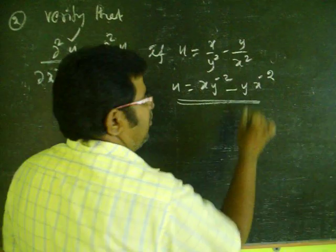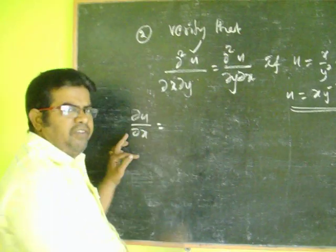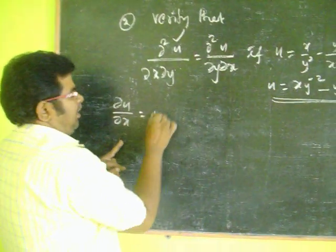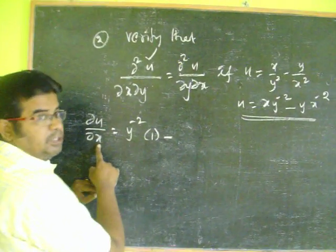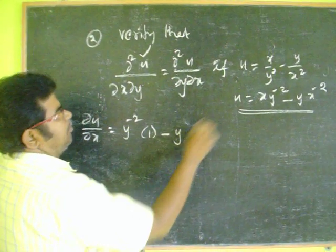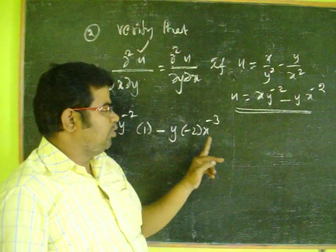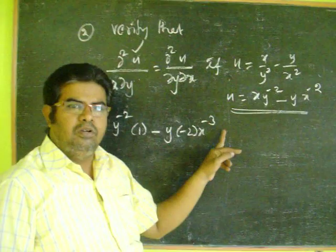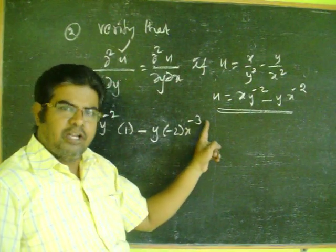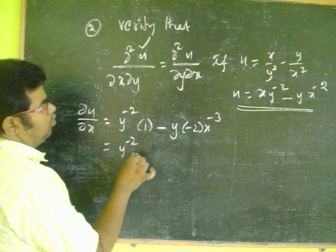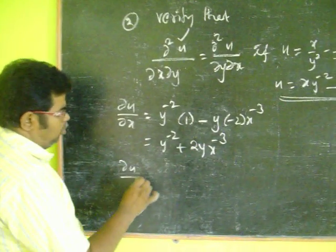This is a function u in terms of x and y. First, find ∂u/∂x. The derivative with respect to x treats y as a constant. Therefore, y⁻² is a constant and derivative of x with respect to x is 1. For the second term, derivative of x⁻² with respect to x is minus 2·x⁻³, using the formula d/dx(xⁿ) = n·xⁿ⁻¹. So ∂u/∂x = y⁻² + 2y·x⁻³.